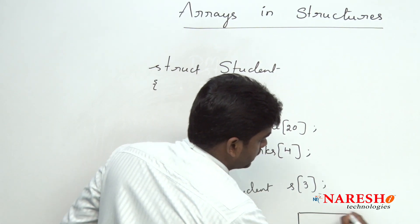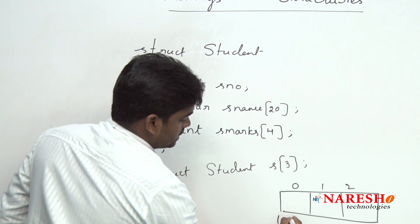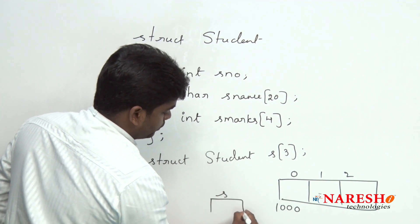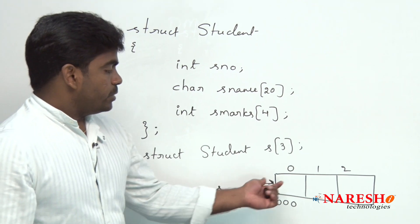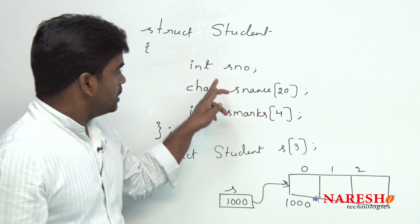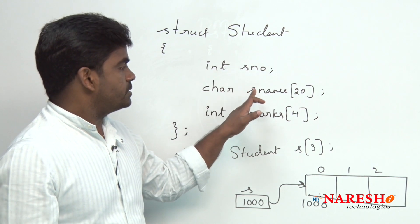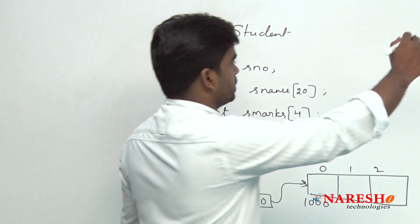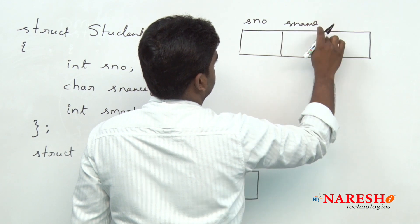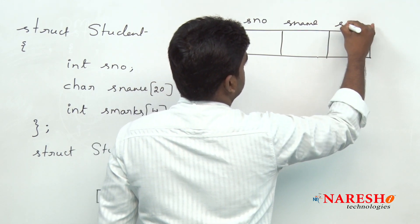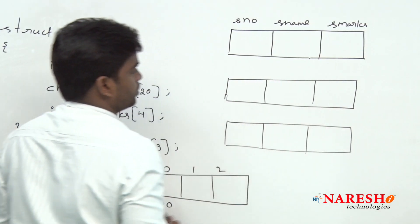Here we are allocating memory to this array 's', and the base address will be stored into variable 's'. Now, all 3 records get memory allocations separately — student number, student name, and student marks. Like that, total 3 records memory allocation.